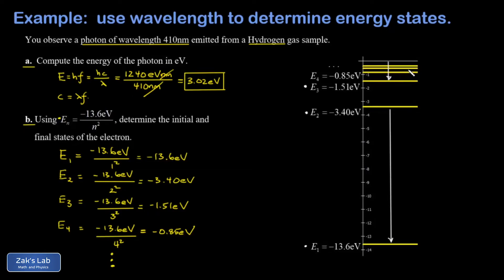Even if I went from a very large value of n down to n equals three, that would only yield about one and a half electron volts for the photon. So I know for sure I'm looking at a transition down to the n equals two state and that simplifies the search.